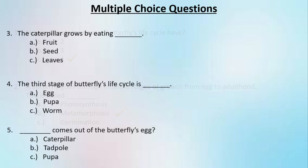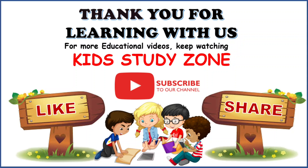Question number three: the caterpillar grows by eating? The correct answer is leaves. Question number four: the third stage of the butterfly's life cycle is? The correct answer is caterpillar. Question number five: what comes out of the butterfly's egg? The correct answer is caterpillar.